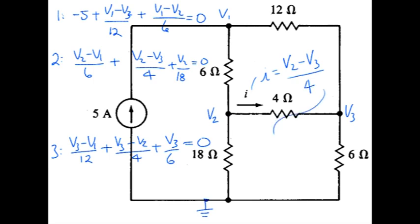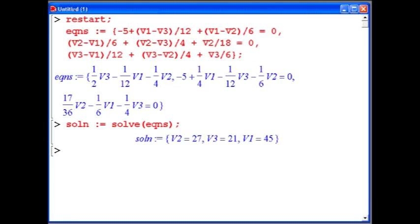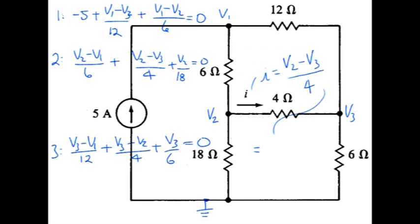So I'll continue down here. Coming back to our Maple worksheet, we see V2 is 27 and V3 is 21. So this is 6 divided by 4, which is 1.5 amps. And that's the end of the problem.